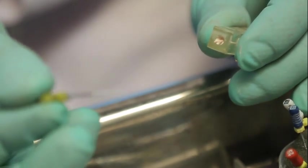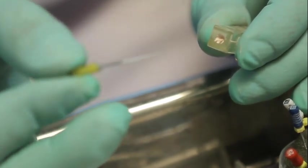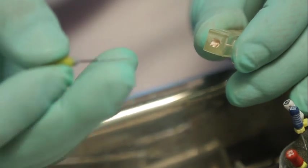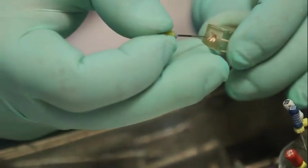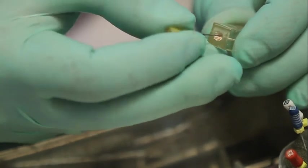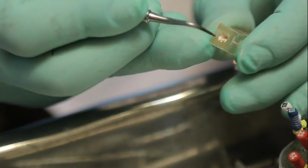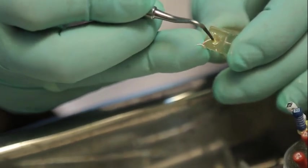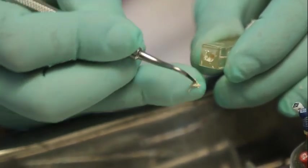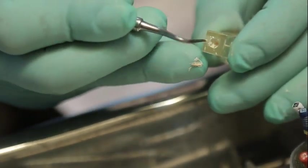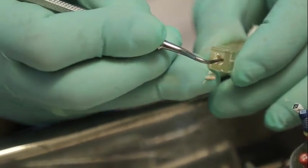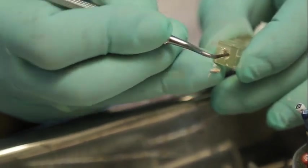In very narrow canals you can use the yellow file also. This one is nickel titanium spreader, 4% files. You may try to insert that also but it is very tight. So there is no space. Remove the excess coronal GP using a heated instrument and just vertically plug using that instrument itself.